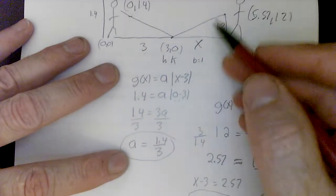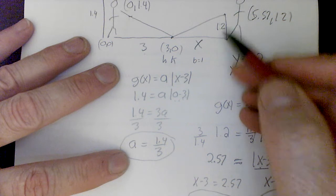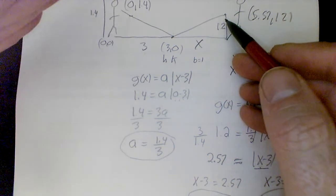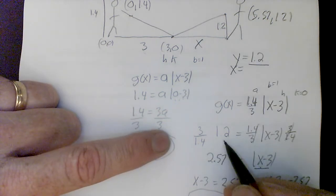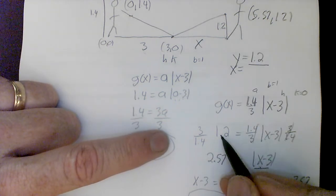Now, they want to know when it reaches a height of 1.2. And the key term here is height, indicating that we're looking for a y value. So I want to plug in 1.2, but be aware that you're going to get two answers.